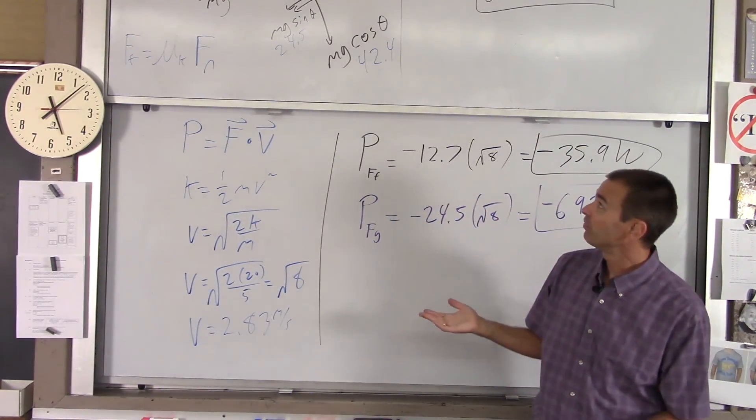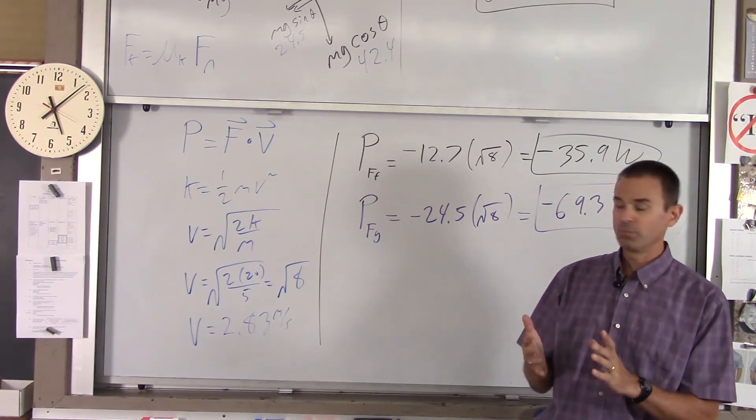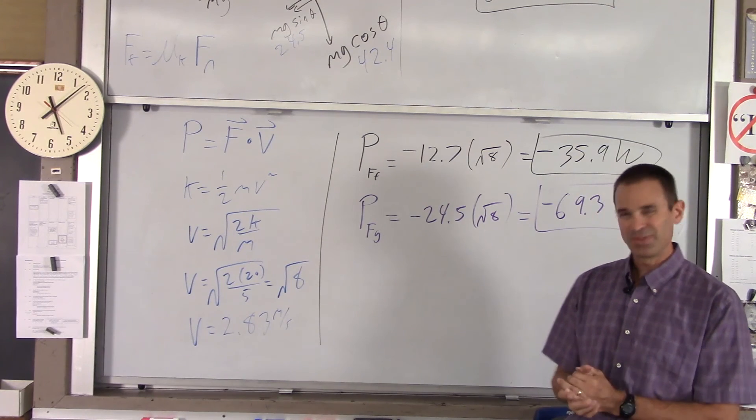So, that's an example of using work energy considerations to look at the motion of an object with friction up an incline. So, thank you very much.